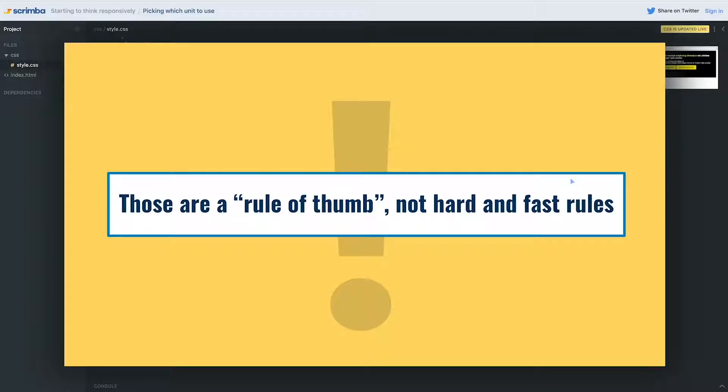But those are a rule of thumb and they're not hard and fast rules. Sometimes I will set a font size in an em if I have a good reason for it because I understand how they work. And sometimes I will set a margin or padding using rem because I want it to be a set size and I don't want it to be relative to whatever. I don't want it to be relative to that font size, I want it to be relative to the root for one reason or another.